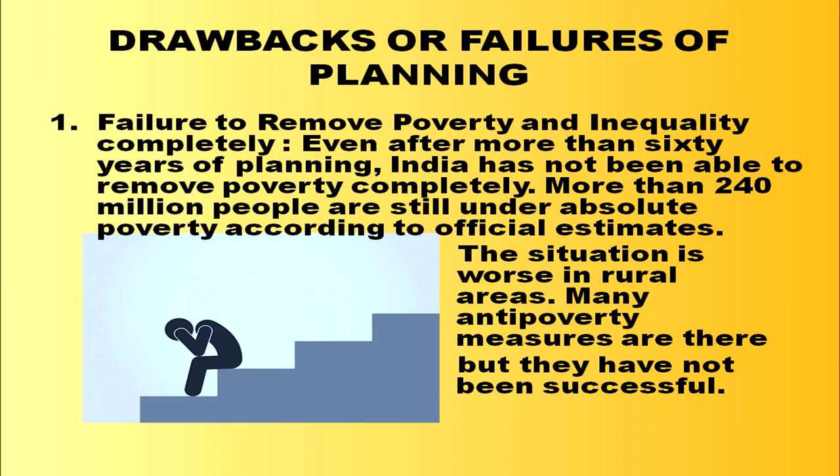The fifth achievement is expansion of foreign trade. Due to industrialization, India's dependence on import of capital goods has declined — many items which were imported earlier are now being produced domestically, with considerable improvement in both exports and imports. The first drawback is the failure to remove poverty and inequality completely. Even after more than 60 years of planning, India has not been able to remove poverty completely. More than 240 million people are still under absolute poverty according to official estimates, and the situation is worse in rural areas.